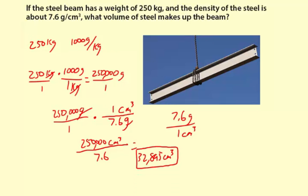Let's review the process. We did some unit analysis to convert the kilograms to grams. Then we did another unit analysis to figure out how to change from the mass to the volume using the density. And in this case, by aligning the units, we could tell we divided 250,000 grams by 7.6 grams per cubic centimeter. And then we ended up with our final solution of 32,895 centimeters cubed or cubic centimeters.